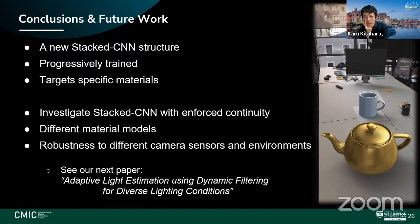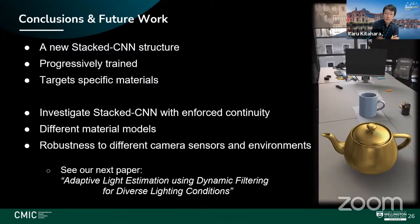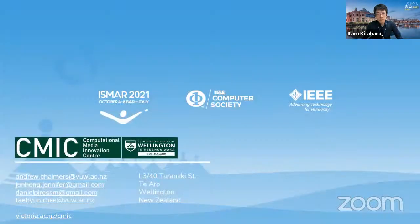In conclusion, we propose a new stacked CNN structure that is progressively trained, where each layer targets a specific material. Future work could investigate stacked CNNs enforcing continuity between roughness levels, different material models, and robustness to different camera sensors and environments. We also encourage you to check out our next paper titled 'Adaptive Light Estimation Using Dynamic Filtering for Diverse Lighting Conditions.' Thank you.